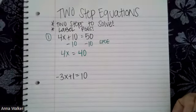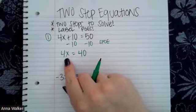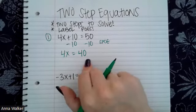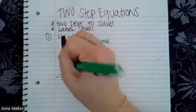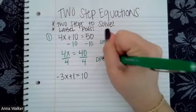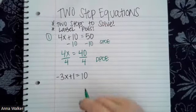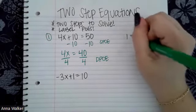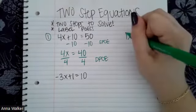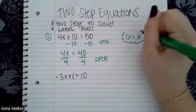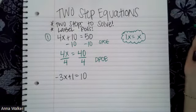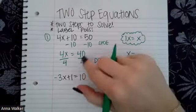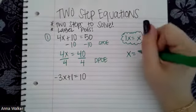Now that I've gotten rid of my constant, all I have left is my coefficient — the BFF — that I'm going to get rid of. This is saying four times something makes 40. So I can use the division property of equality, or DEPOT, in order to solve for X. Four divided by four is just going to be one X, and one X is just equal to X. So X is equivalent to 40 divided by four, which is 10.